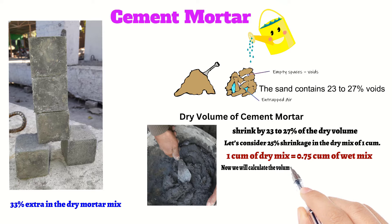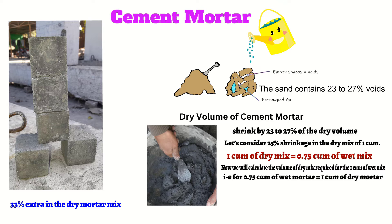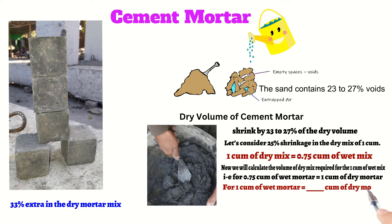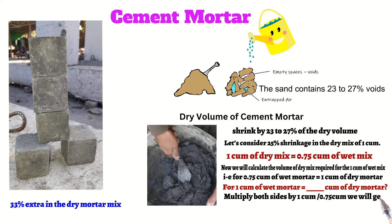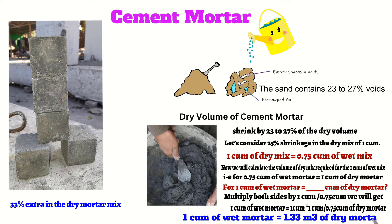Now we calculate the volume of dry mix required for 1 cubic meter of wet mix. For 0.75 cubic meter of wet mortar, we need 1 cubic meter of dry mortar. For 1 cubic meter of wet mortar, multiplying both sides by 1 divided by 0.75, we get: 1 cubic meter of wet mortar equals 1.33 cubic meters of dry mortar.